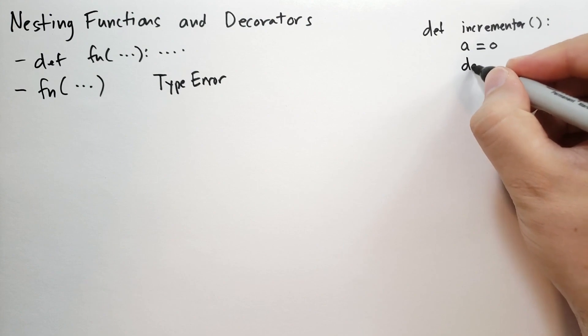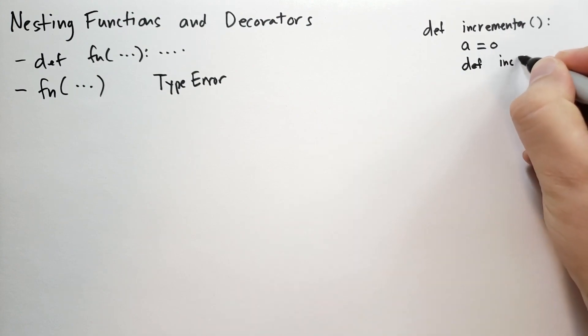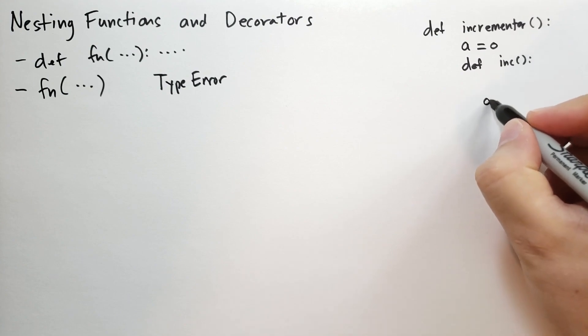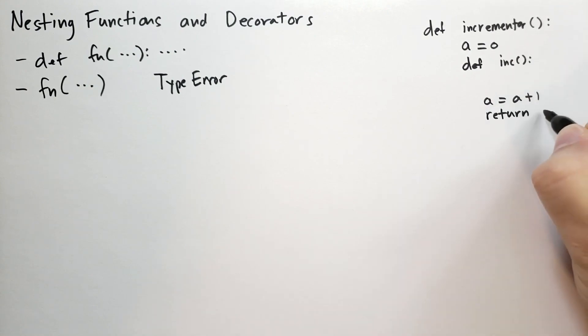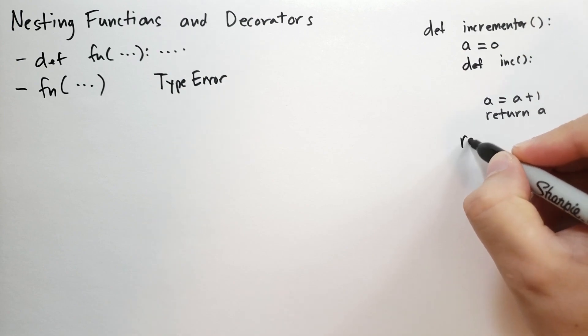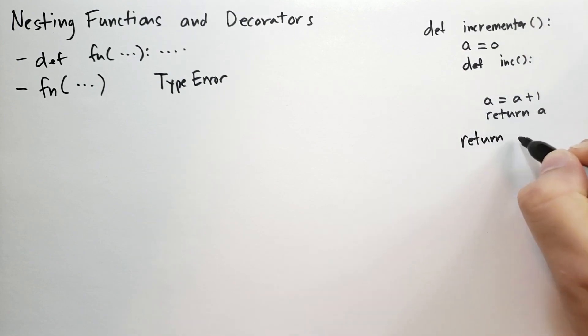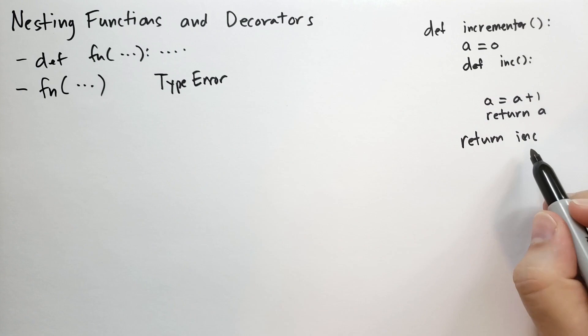And then I'm going to have def inc, I'm going to leave a space here, I'll tell you why later. I'm going to say a is equal to a plus one. And we're going to return that new value of a. And then the incrementor function is going to return the contents of the inc variable, which is that function we've just defined.